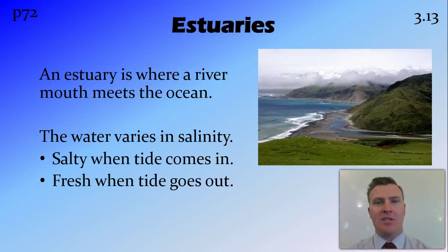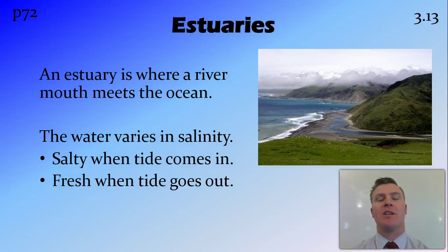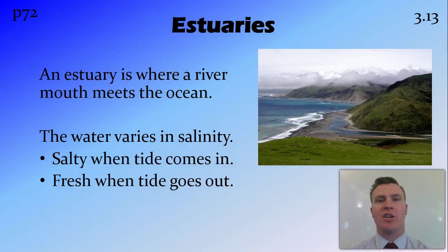An estuary is where a river mouth meets the ocean. You have fresh water coming from the river and salt water coming from the ocean. In a high tide environment, the salty water from the ocean comes in and the estuary will be salty. In low tide, that salt water goes out and is flushed out, replaced by fresh water from the river. This is really hard for organisms living in this environment because twice a day it changes from salt to fresh and then back to salt again.